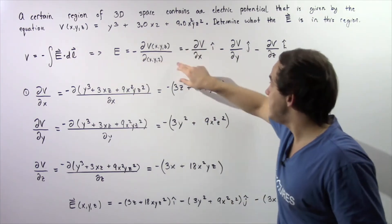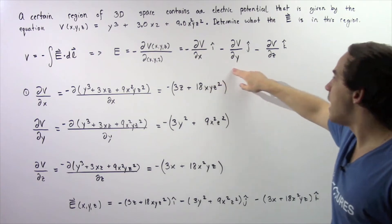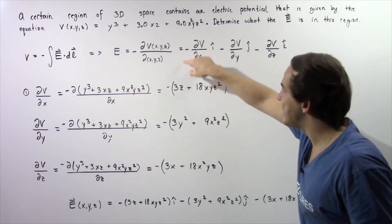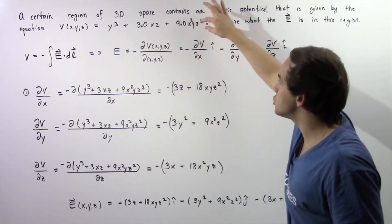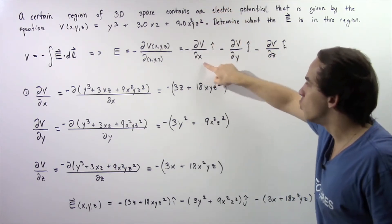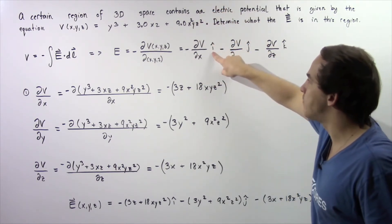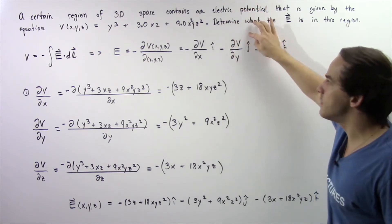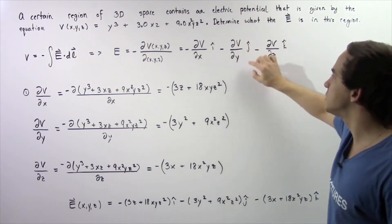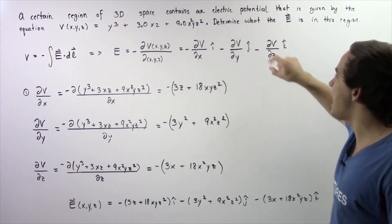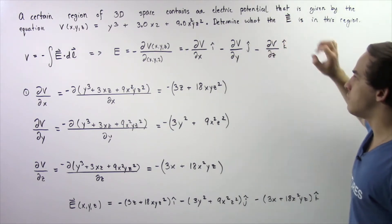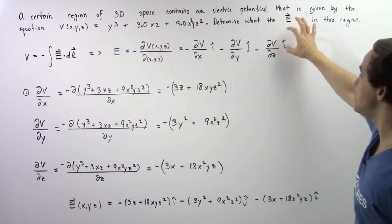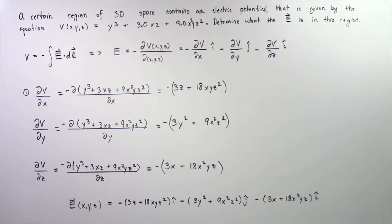So basically, this is equal to the following notation. The electric field is equal to the negative of the partial derivative of the voltage with respect to x multiplied by i-hat, minus the partial derivative of the voltage with respect to y multiplied by j-hat, minus the partial derivative of the voltage with respect to z multiplied by k-hat.